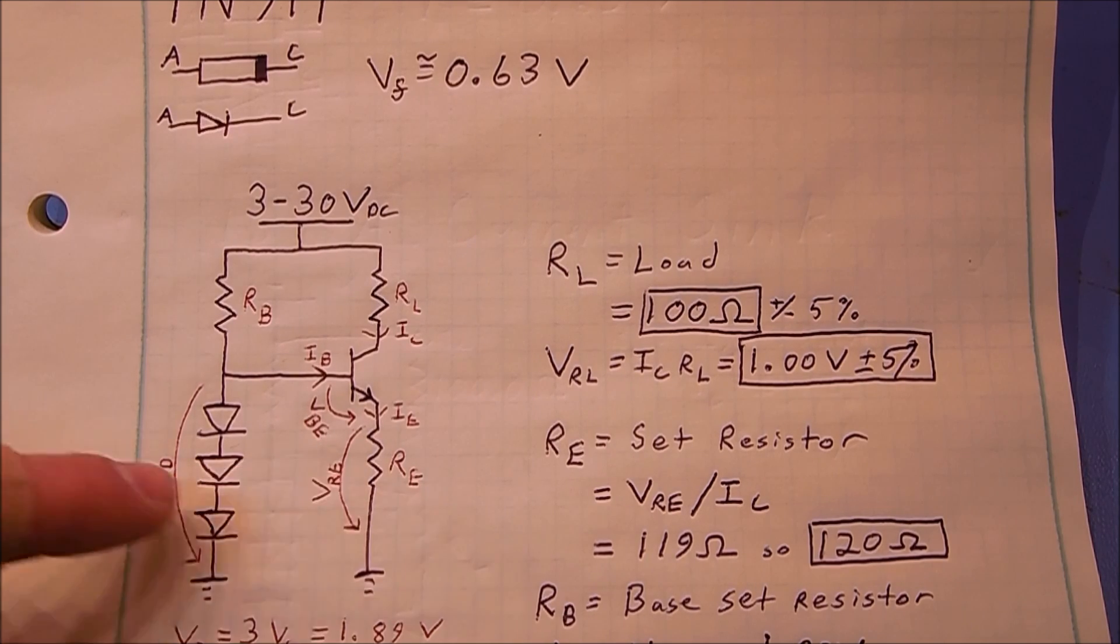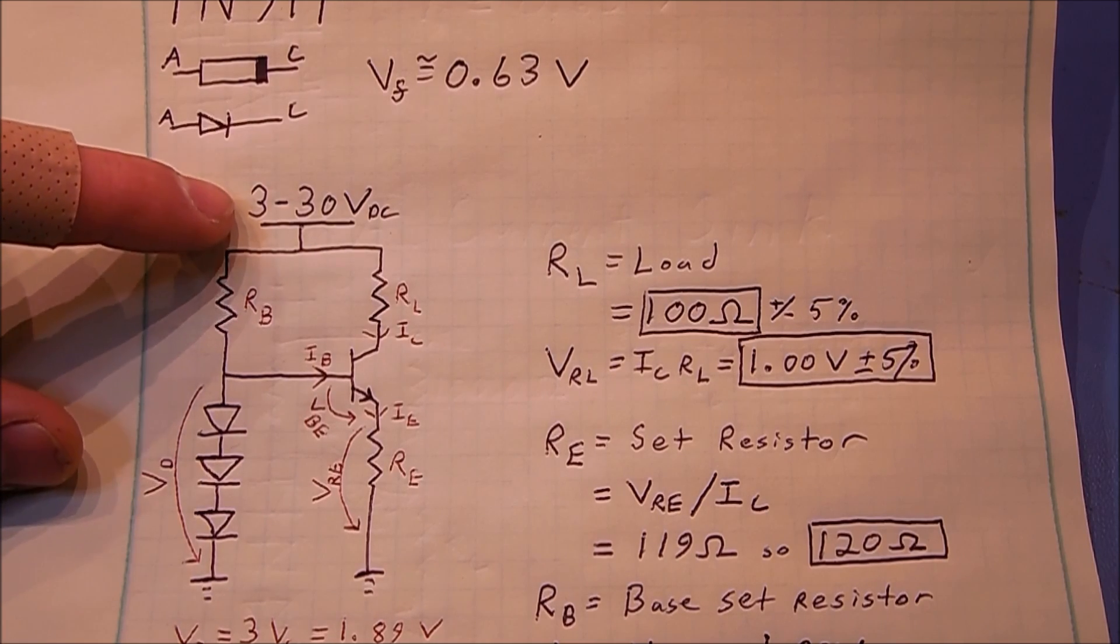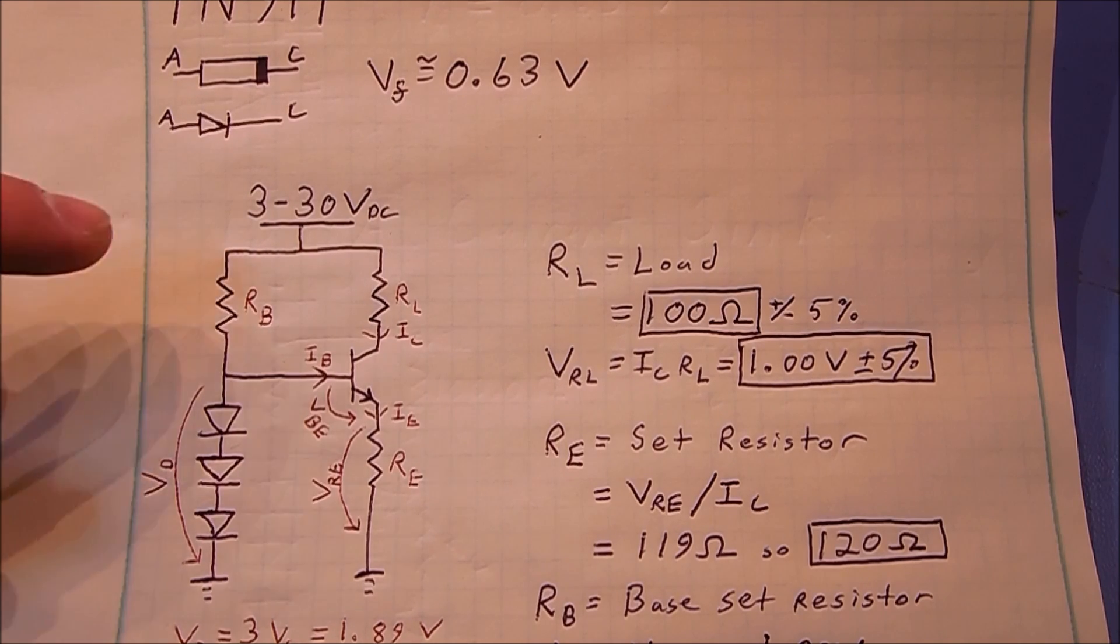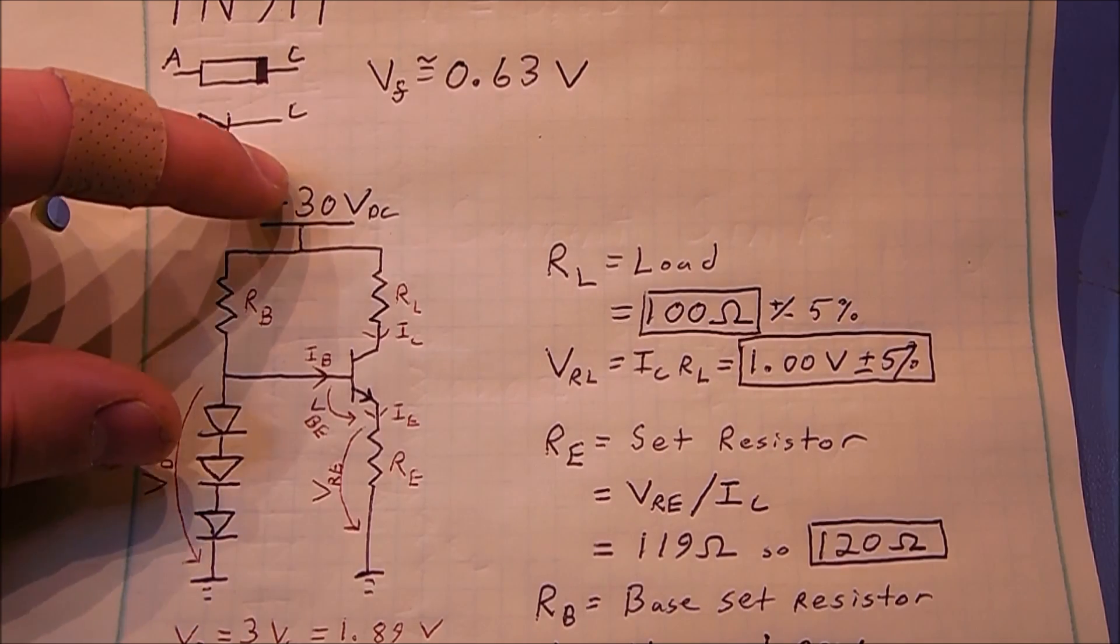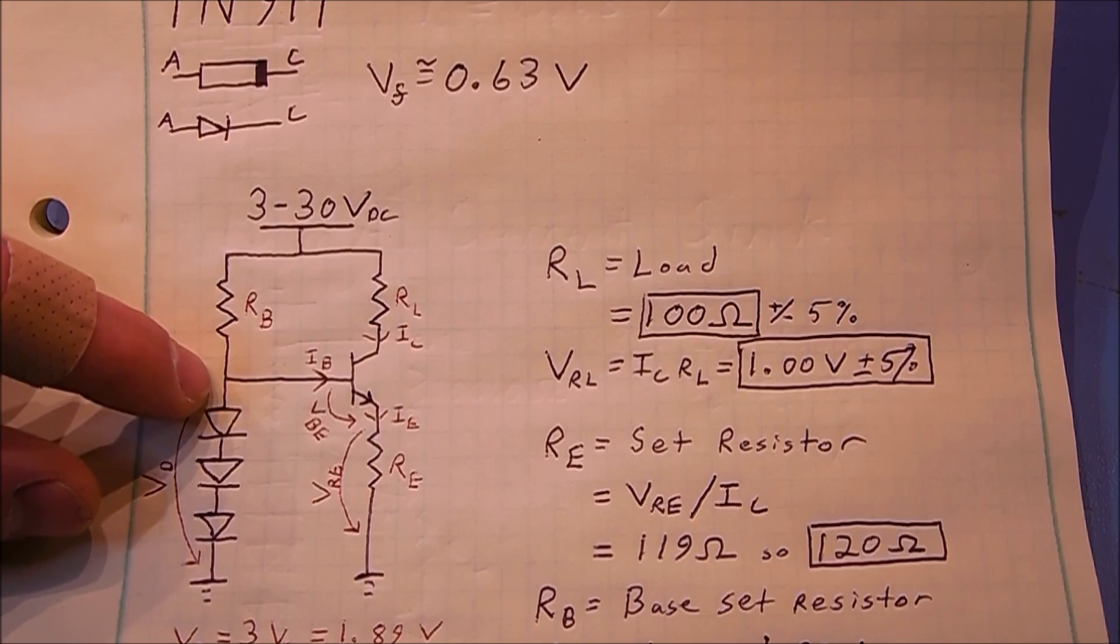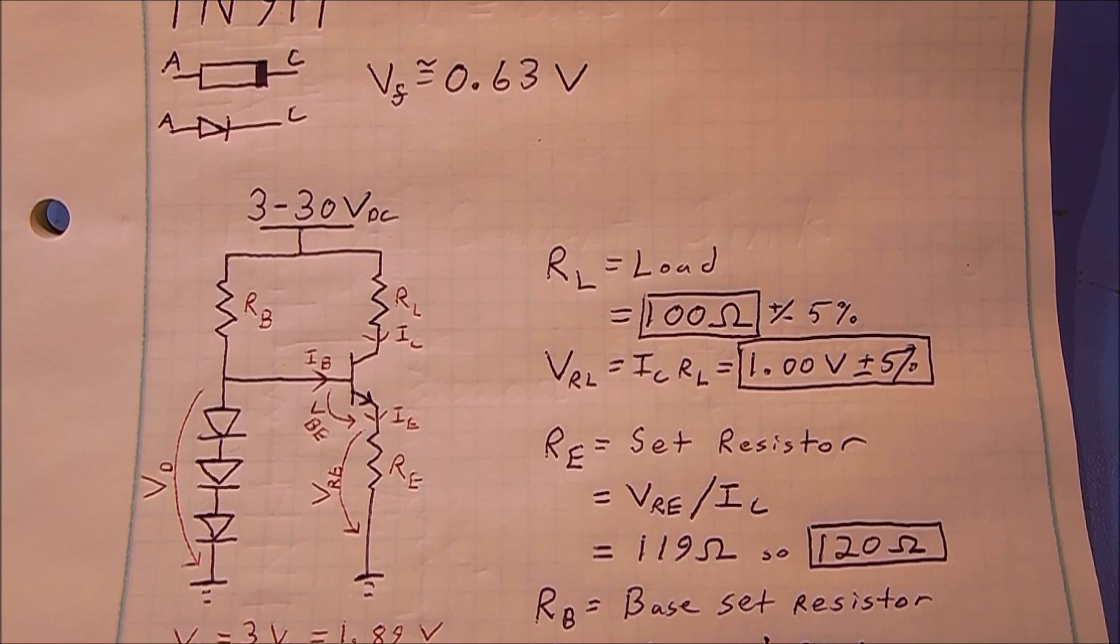Now we know every component except our base resistor. For my supply, I've chosen 5 volts. This circuit should be functional from 3 to 30 volts, but 5 volts is pretty common. So if we have 5 volts here, we have 5 minus about a 2 volt drop, which gives us about 3 volts across that resistor.